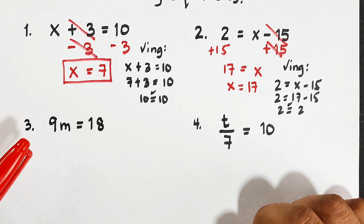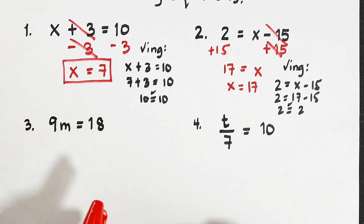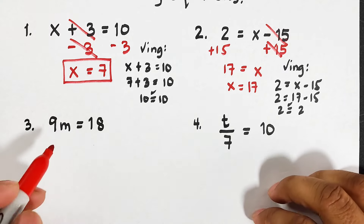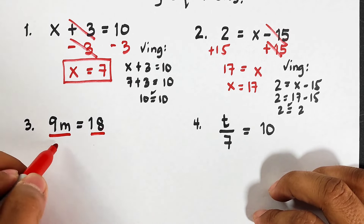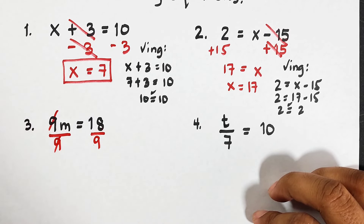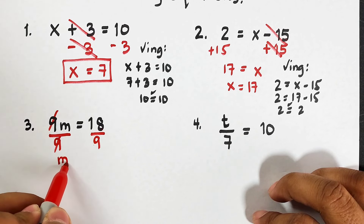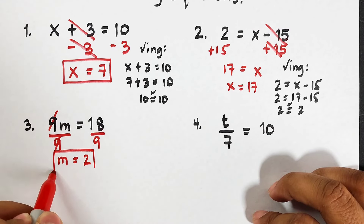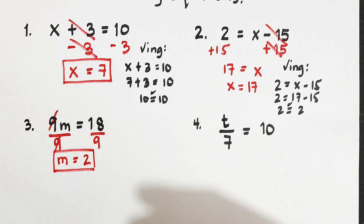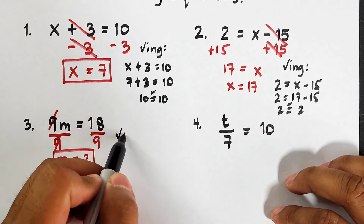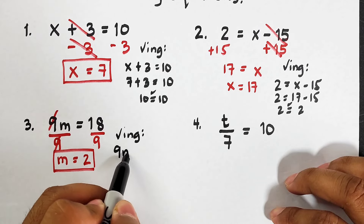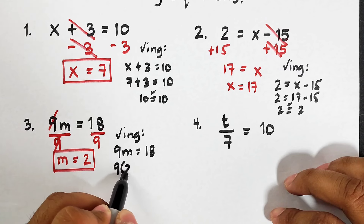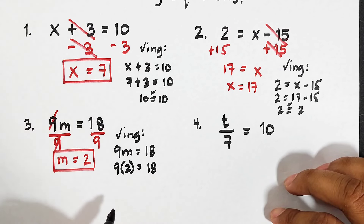Now let's move on with example number 3 and example number 4. In example number 3, we have 9m is equal to 18. This time we don't see addition or subtraction — instead, 9 and m represent multiplication. To undo or eliminate the 9, we use the inverse operation: if the operation is multiplication, we use division. We divide both sides of the equation by 9. Since 9 divided by 9 is 1, what we have now is m, and on the other side 18 divided by 9, which is 2. That is the answer for item number 3.